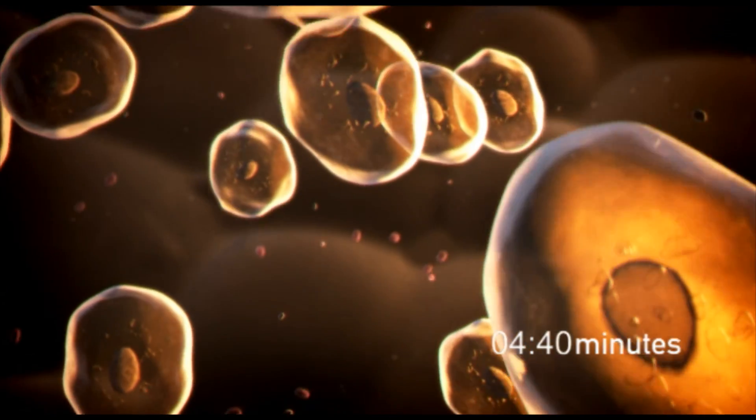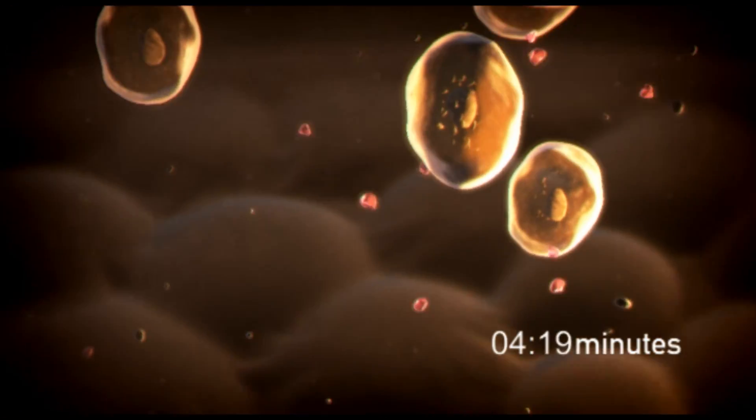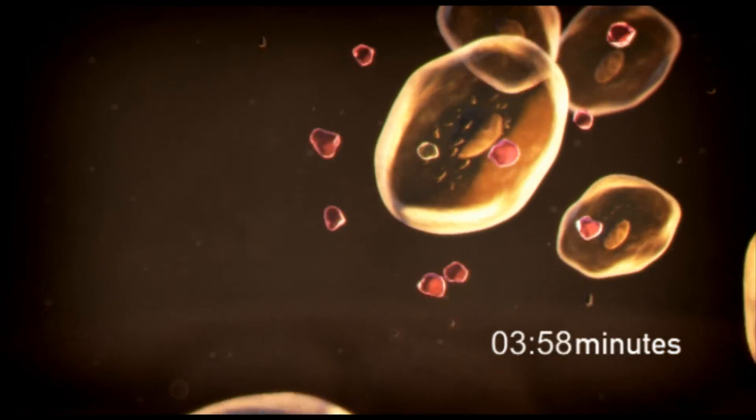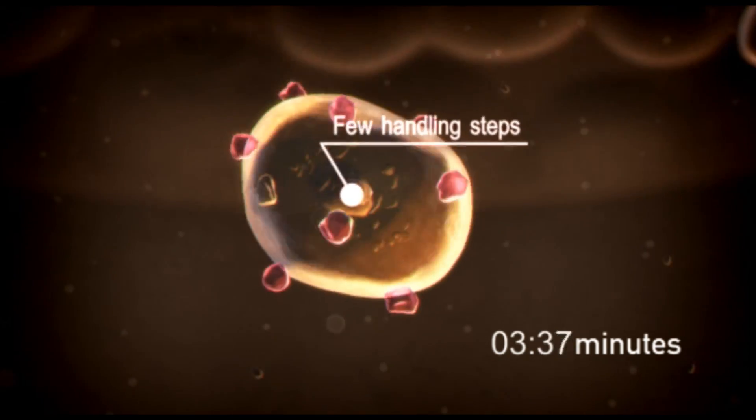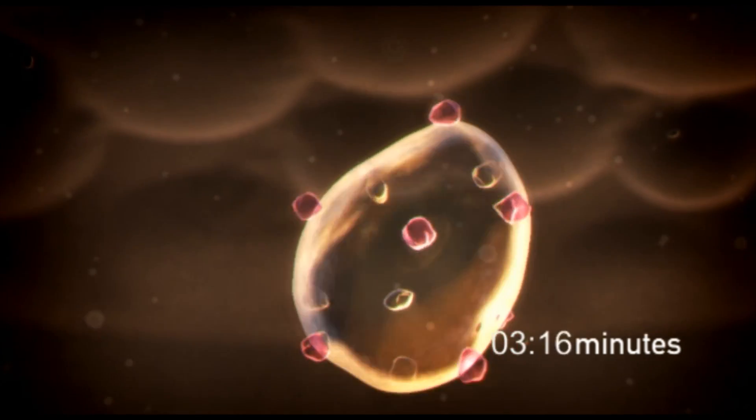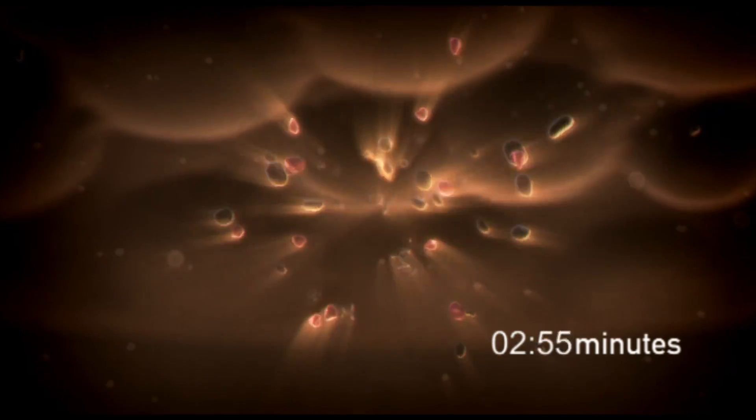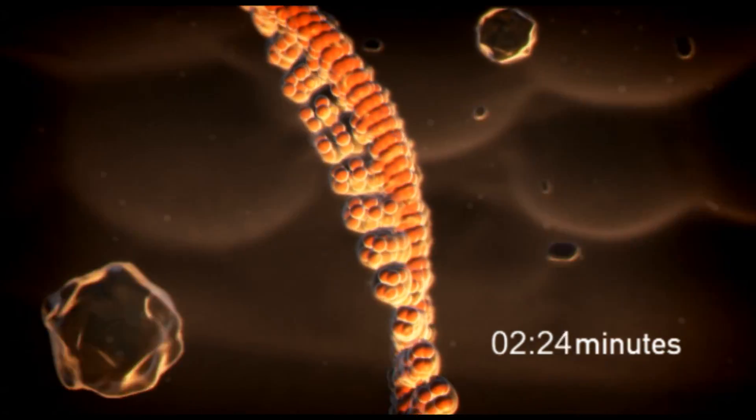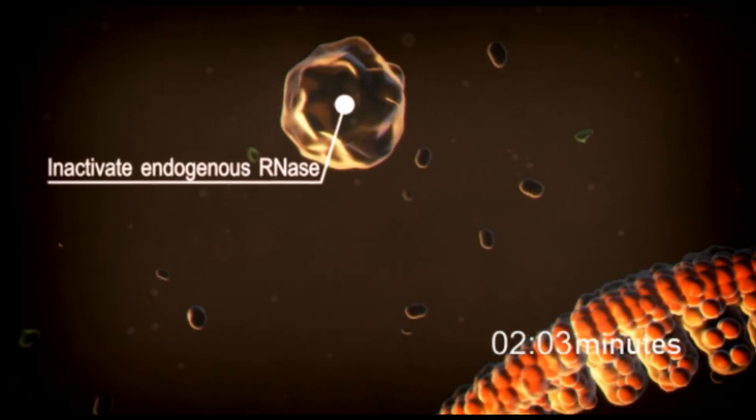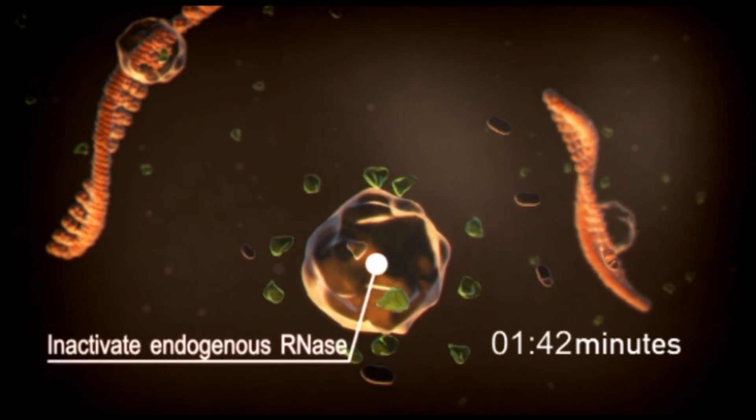The Ambion cells to CT kit also reduces the risk of contamination and loss of sample since there are few steps in which the sample is pipetted. Cells are lysed during this incubation, and RNA is released into the lysis solution, which also contains reagents to inactivate endogenous RNases.